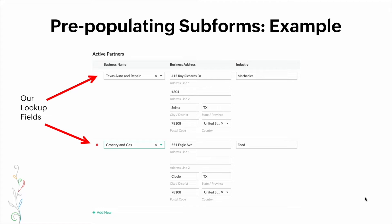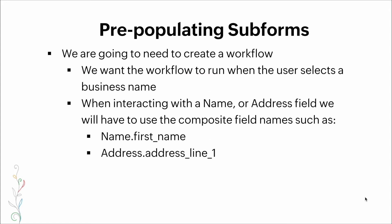Here's how the subform actually looks. We have two records under the column with the lookup field on the left side for business name — that is where we select the lookup. As we make a selection, the information on the right fields will be pre-populated. In order for this to work we're going to need to create a workflow.